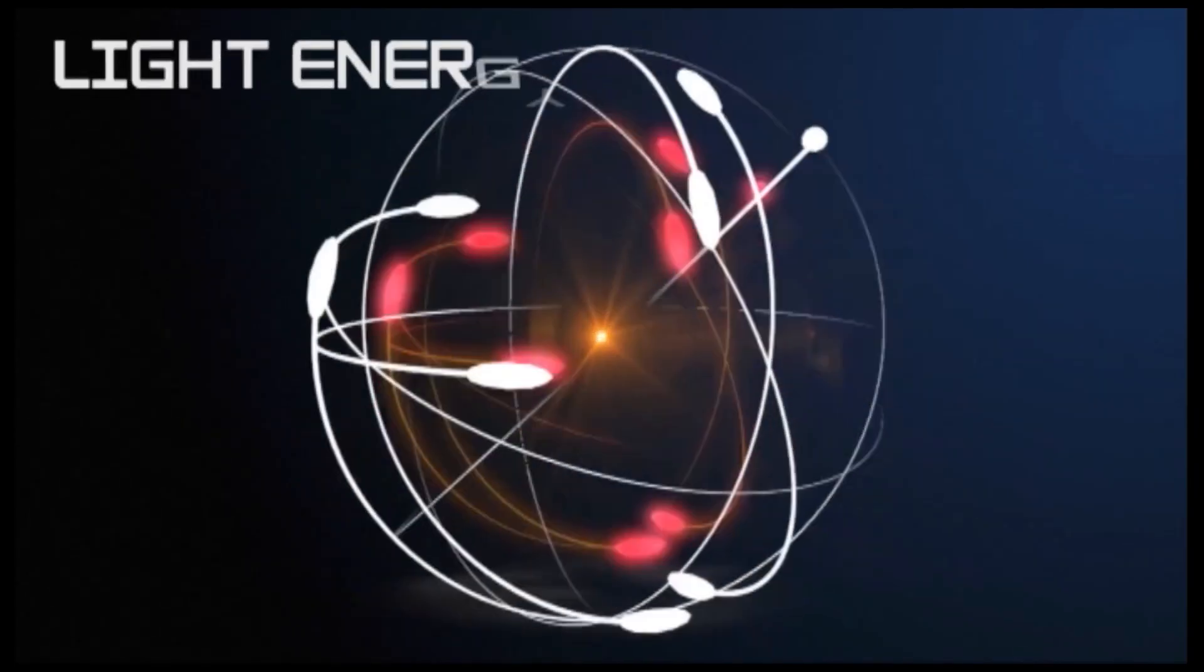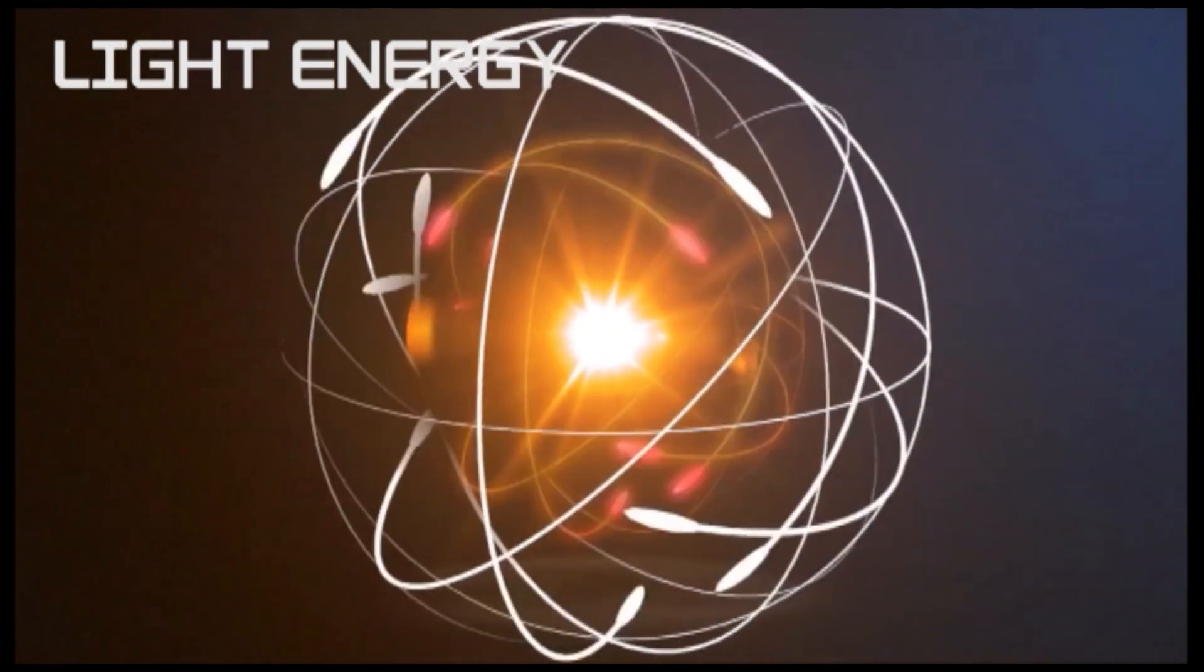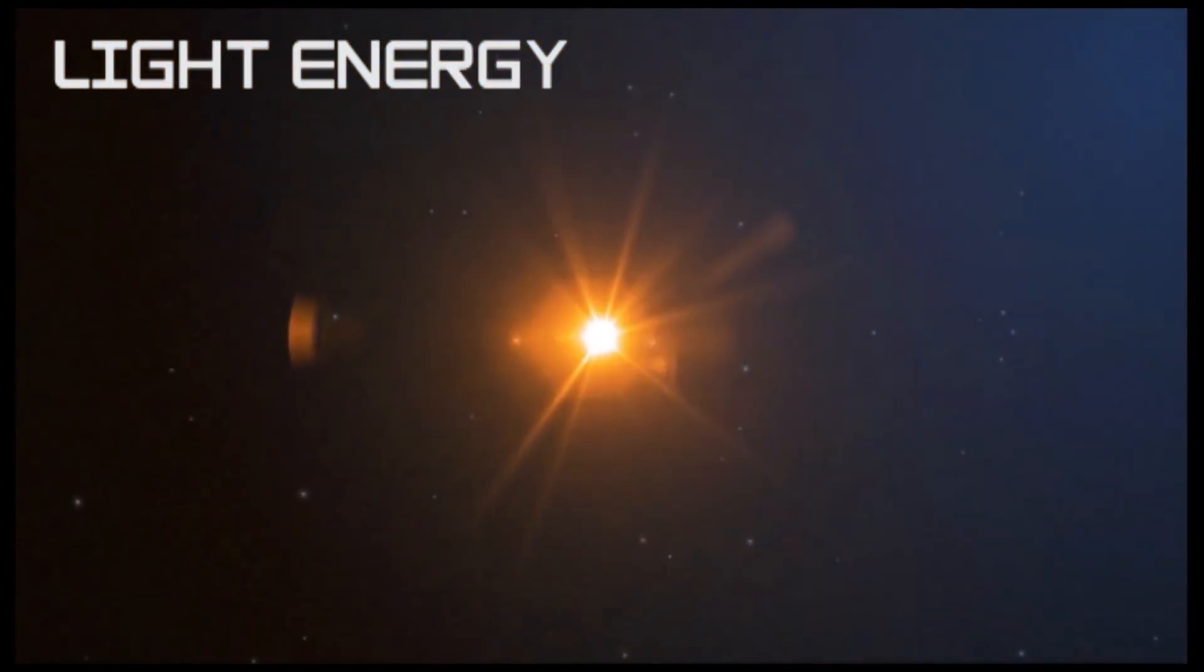Light energy or radiant or electromagnetic energy is the form of electromagnetic radiation. Light has photons. Photons are produced when an object's atom heats up.